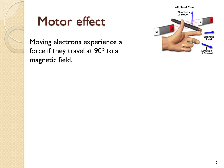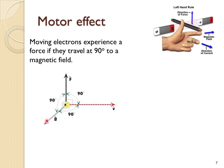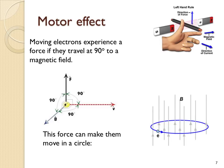Moving electrons experience a force if they're travelling at 90 degrees to a magnetic field, because an electric current is really a flow of electrons travelling in the other direction down the wire. Remember, conventional current is represented as flowing from plus to minus, but really electrons flow the other way. Here, if an electron flows to the right in a magnetic field at 90 degrees to it sticking out of the page, the electron will experience a force pushing it up. This force will make the electron move in a circle — if it travels in a uniform magnetic field, the electron will always be pushed towards the centre of the circle, and its direction and the force continuously change.